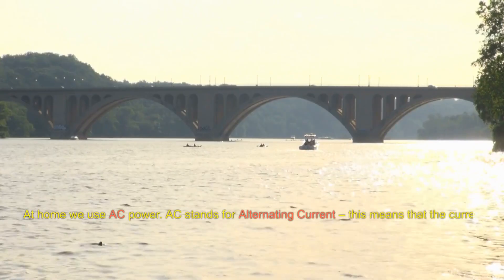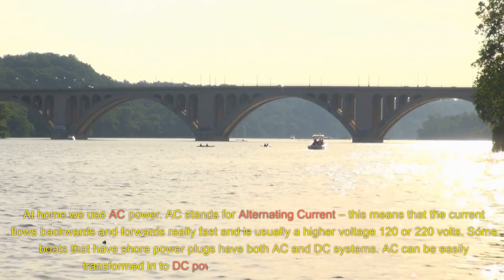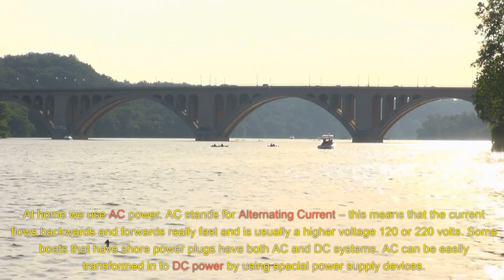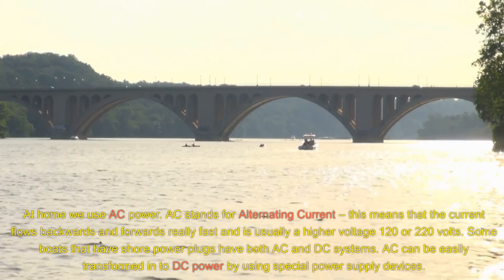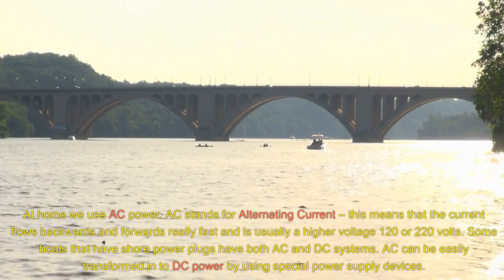At home, we use AC power. AC stands for alternating current. This means that the current flows backwards and forwards really fast and is usually a higher voltage, 120 or 220 volts. Some boats that have shore power plugs have both AC and DC systems.